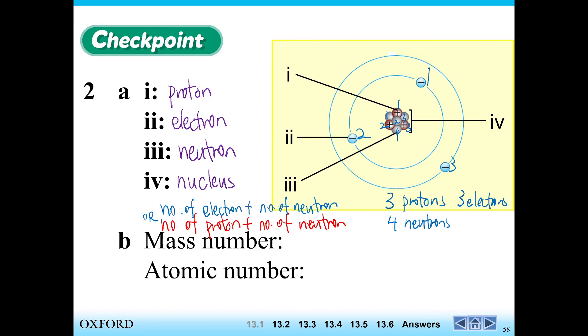So what's the mass number? The mass number would be the number of protons, which is 3, plus the number of neutrons, which is 4. So 3 plus 4, the mass number would be 7.